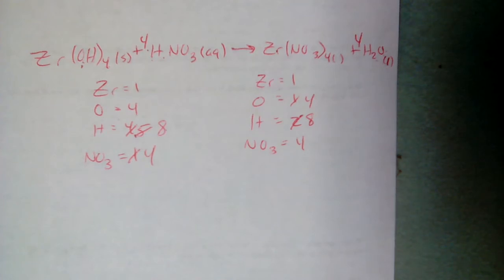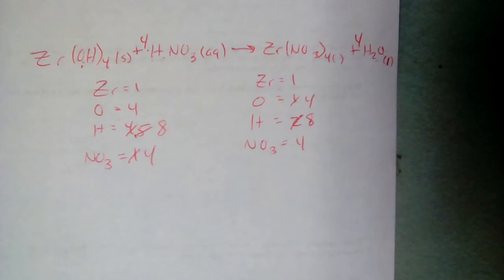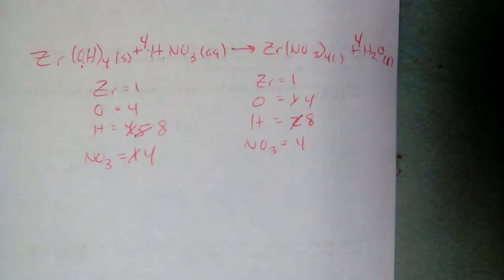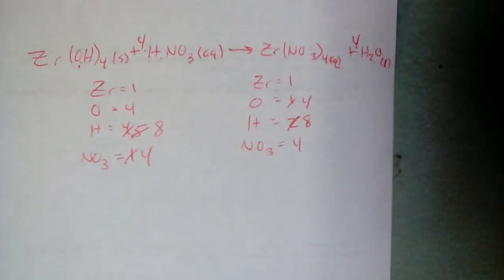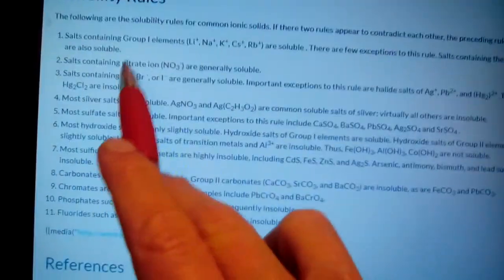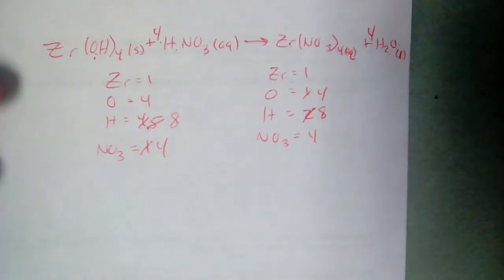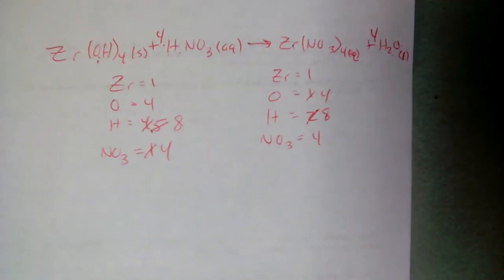Looking through the solubility rules online, zirconium specifically isn't listed, but nitrates — NO3⁻ — are generally soluble, so zirconium(IV) nitrate is most likely aqueous. That's how you determine unknown states: search solubility rules and look up the relevant ion. The rest of the problems can be done the same way.